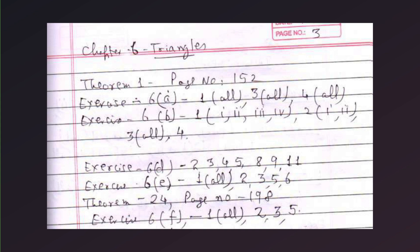Chapter 6, triangles. Theorem 1, page number 152. Exercise 6A, 1 all, 3 all, 4 all. Exercise 6B, 1, under 1 numbers 1, 2, 3, and 4, 2 numbers 1, 2, 3 all, 4. Exercise 6D, 2, 3, 4, 5, 8, 9, 11.